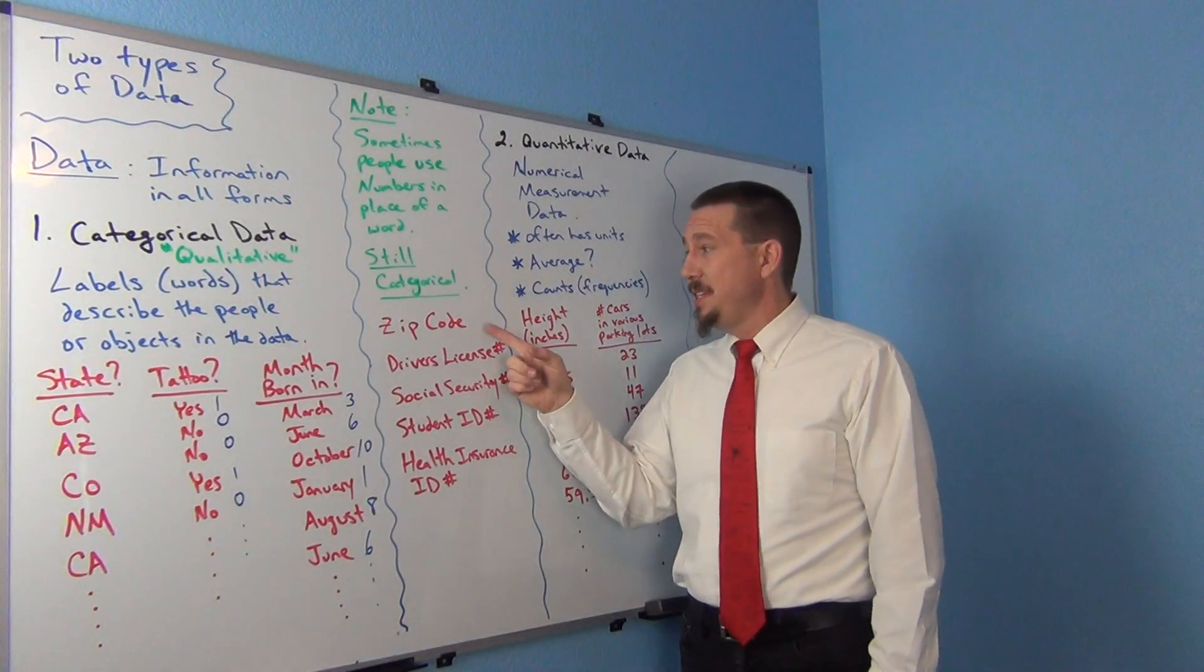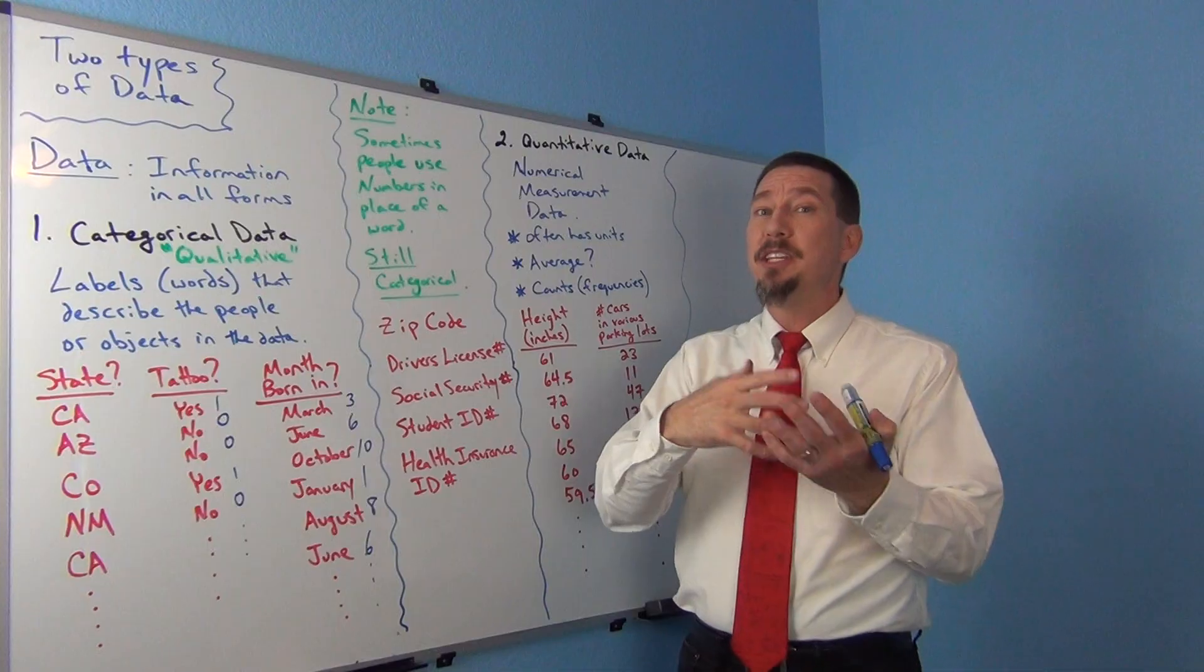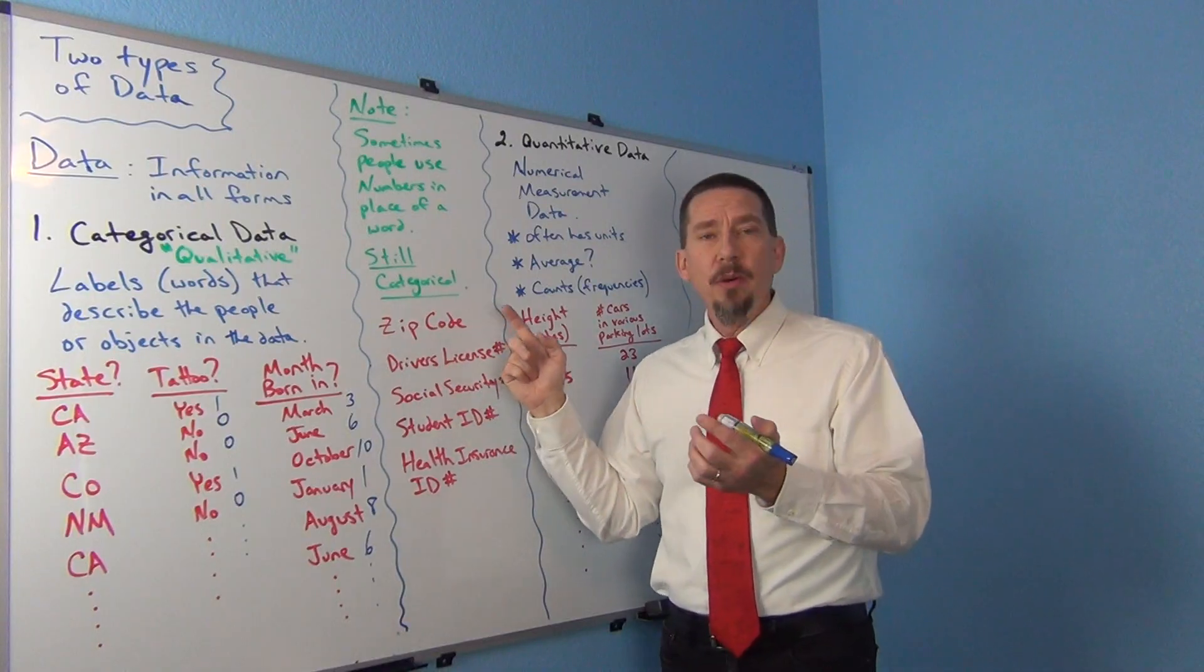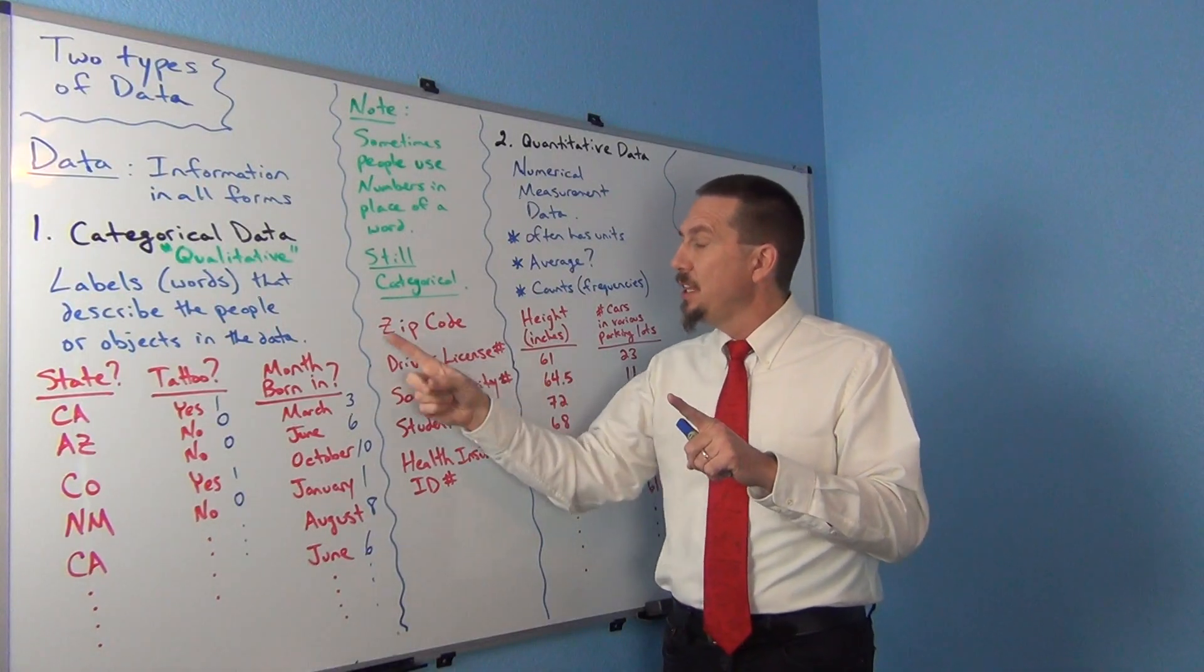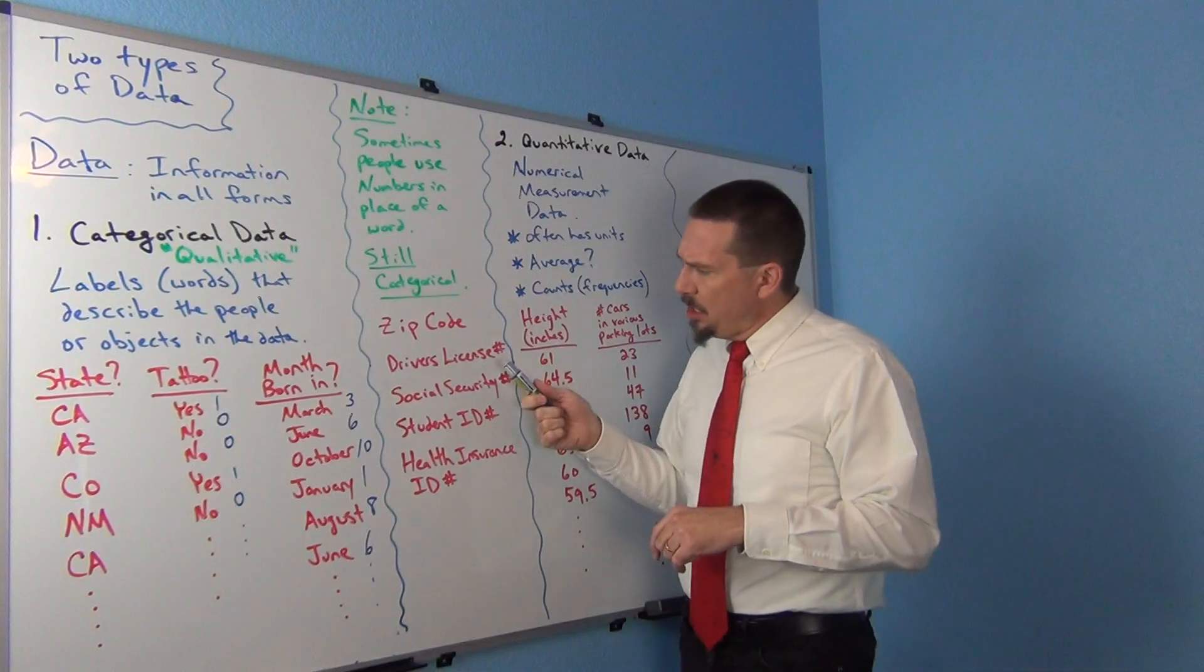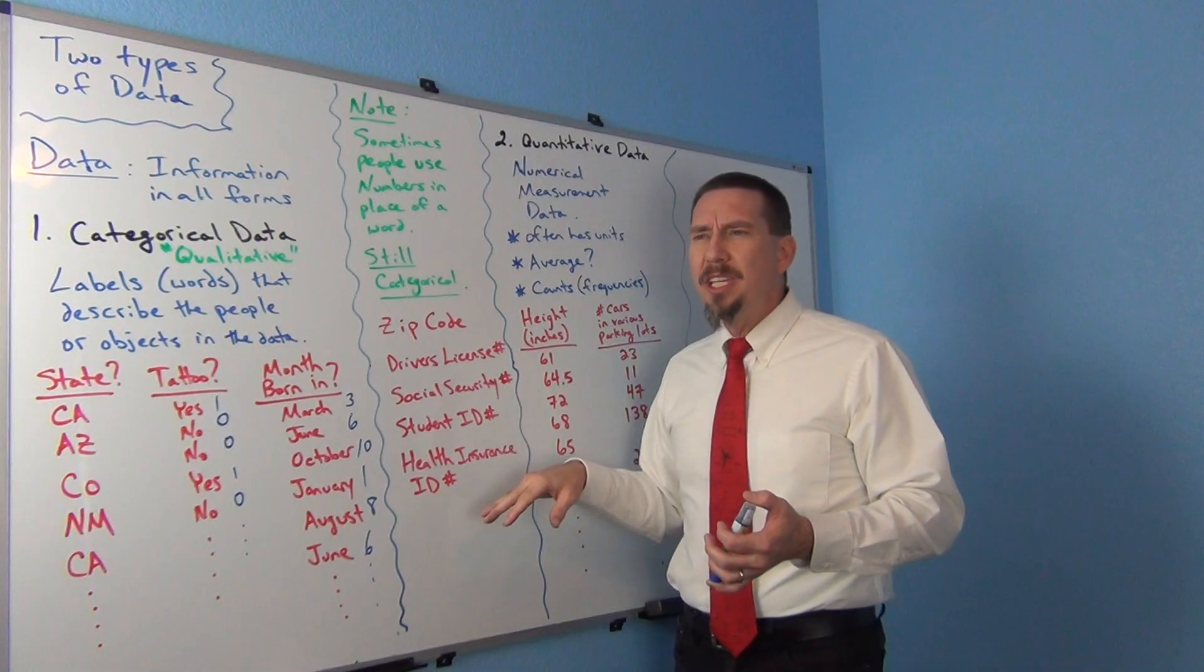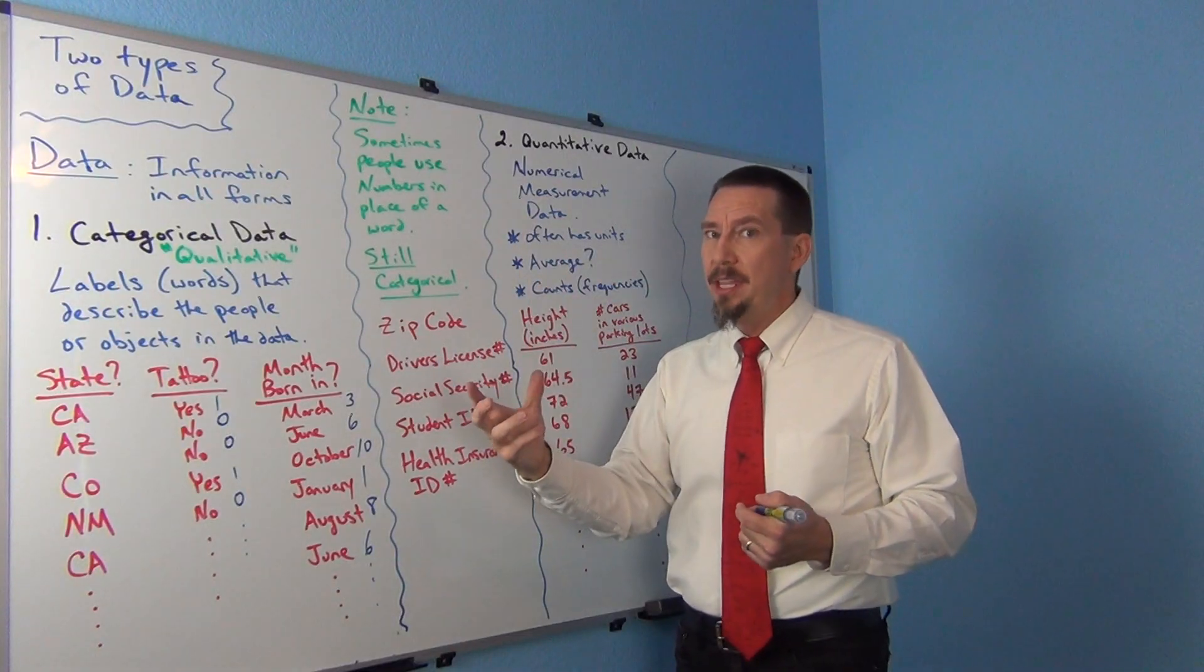So you have to be really careful of that. Sometimes you'll get numbers that are used in place of words. And we still have to analyze it like we would analyze categorical data. So some important examples to think about is a zip code. Zip code is a number, but it's really a number in place of me describing where you live. We have zip codes in the U.S. for a number that tells us the general area where you live. So a zip code, even though it's a number, it's not really measuring something. That's an important distinction. It's not counting or measuring something. It's just telling us where you live.